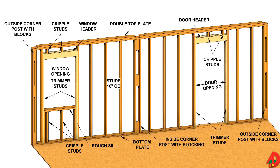Traditionally, 2x4 lumber is used to build a one-story house, but today, 2x6 lumber is most common for exterior wall framing because the additional width provides more room for insulation.